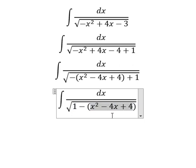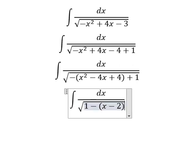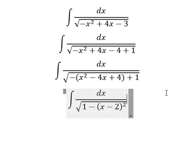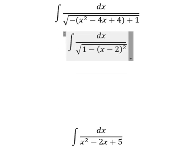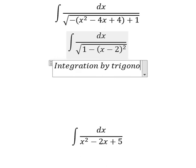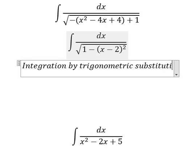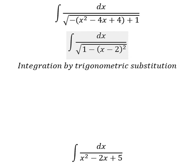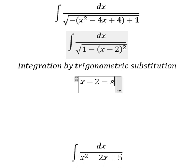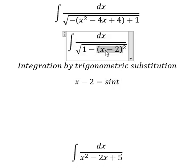This one is about identities, so we have x minus number 2, everything to the power of 2. We can use interpretation by trigonometric substitution, so we put x minus 2 equals to sin(t). Because if I put this one here, we have sin(t) squared — 1 minus sin(t) squared — we change for cos(t) squared.